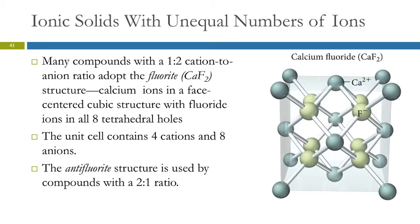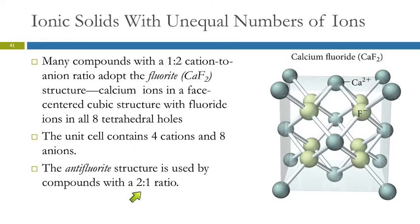There is a very similar structure called an antifluorite — essentially the opposite. It is used by compounds where you have a 2-to-1 ratio instead of 1-to-2, meaning twice as many cations as anions. That's called an antifluorite structure.